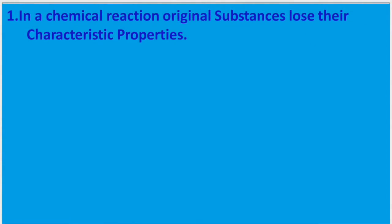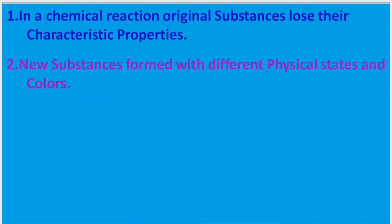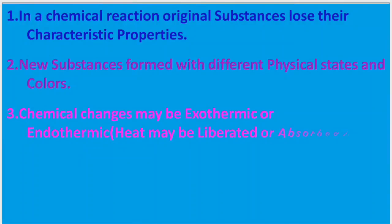From activities 1, 2, and 3, we can conclude that in a chemical reaction, original substances lose their characteristic properties, and new substances are formed with different physical states and colors. From activity 1, chemical changes may be exothermic or endothermic. In an exothermic reaction, heat is evolved; in an endothermic reaction, heat is absorbed. 'Exo' means outside.